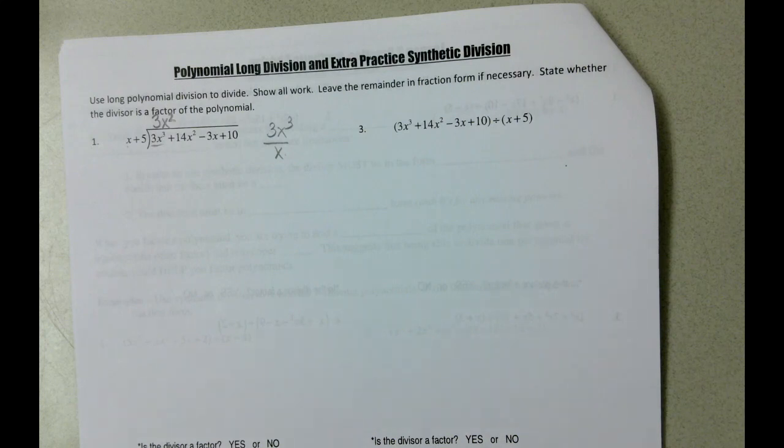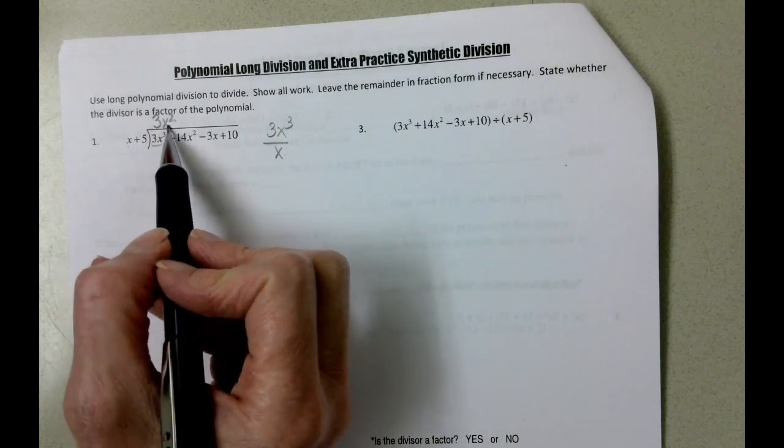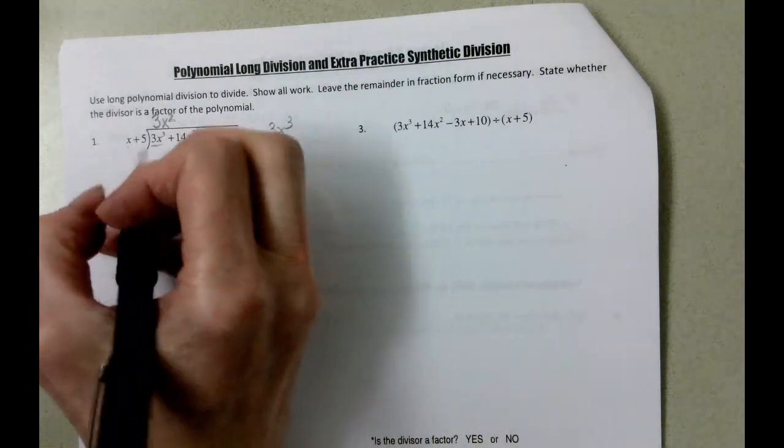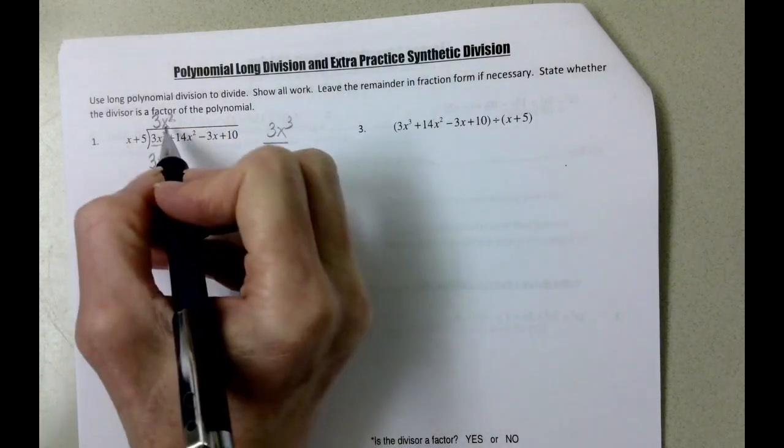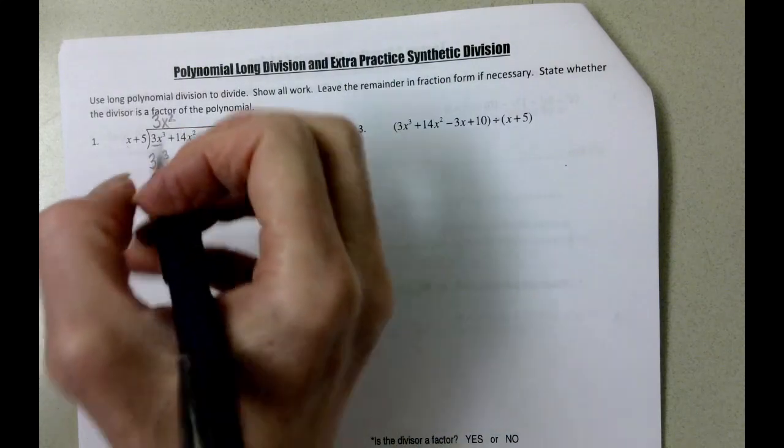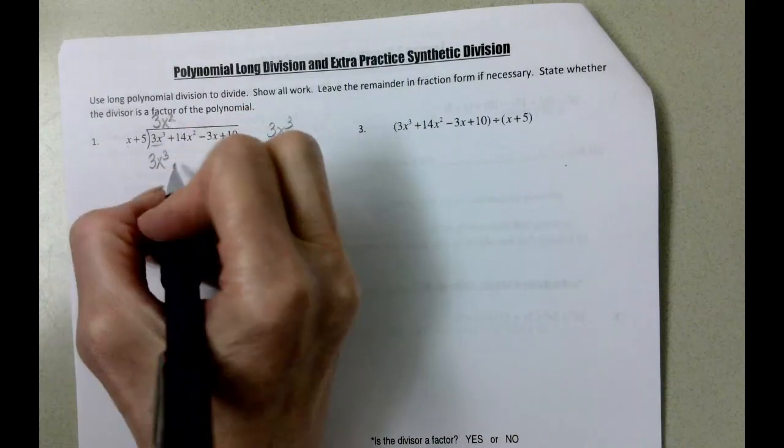And then what's going to happen is we're going to take 3x squared and multiply it by x, and we get 3x cubed. Then we take 3x squared times 5, and it's positive times positive, which is positive.